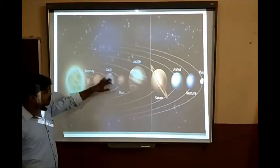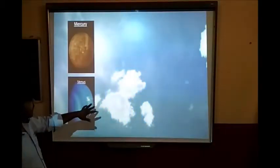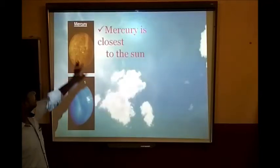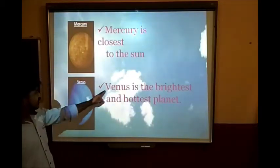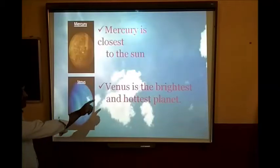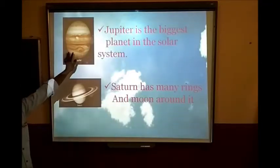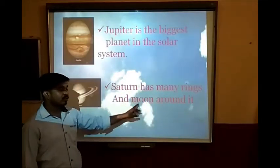Mercury is the closest planet to the sun. Venus is the brightest and hottest planet. Jupiter is the biggest planet in the solar system. Saturn has many rings and moons around it.